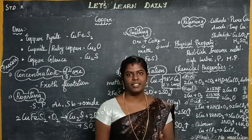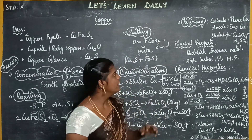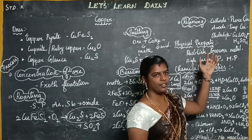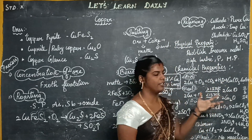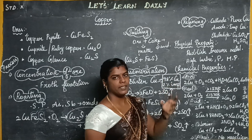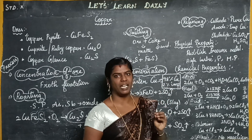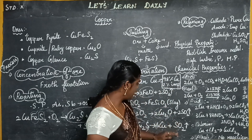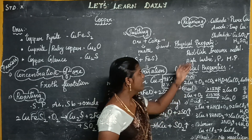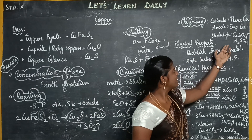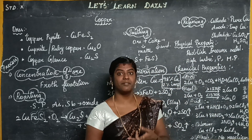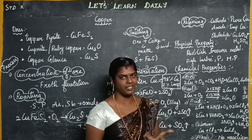Refining is a purifying process. Refining involves a cathode, anode, and electrolyte. This is electroplating. Anode is impure copper. The electrolyte is a combination of copper sulfate with sulfuric acid — mix it.